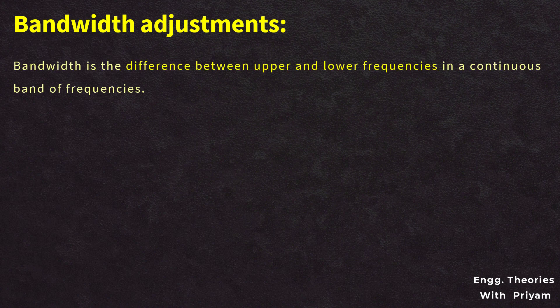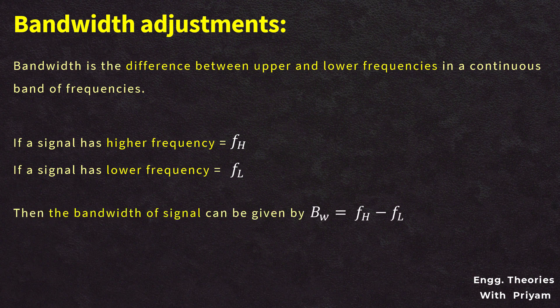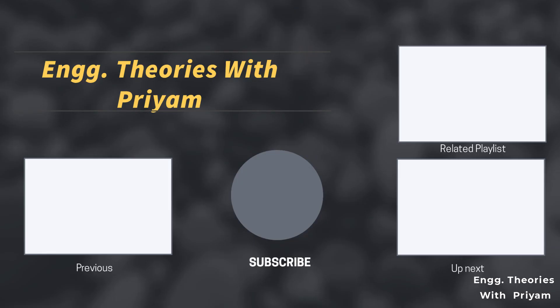Bandwidth adjustment: bandwidth is the difference between the upper and lower frequencies in a continuous band. If a signal has a higher frequency fH and a lower frequency fL, then bandwidth BW = fH − fL. Using modulation, we can change the higher and lower frequencies of the signal and thus adjust its bandwidth. That concludes this lecture — ask any doubts in the comment section, and don't forget to subscribe.